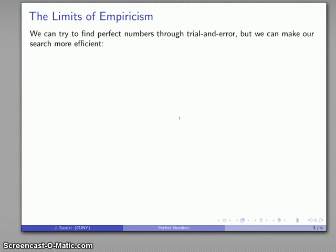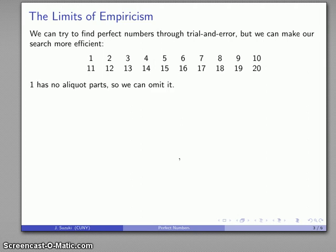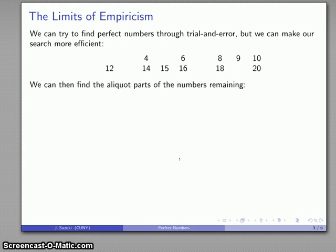Perfect numbers test the limits of empiricism, test our ability to do anything useful in number theory by trial and error. Part of the problem is that, let's say I've found my perfect number 6, well how many others can I find, and what can I say about these perfect numbers? So let's see what happens. I'm going to put down the numbers 1 through 20 and try to find the perfect numbers. 1 has no aliquot parts at all, so it's convenient to just ignore 1. All primes are definitely deficient because the only aliquot part a prime has is 1, so we'll strike the primes from the list.